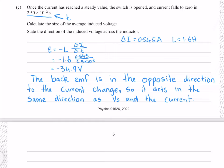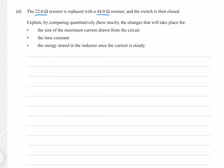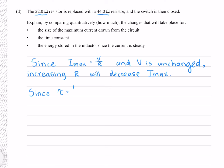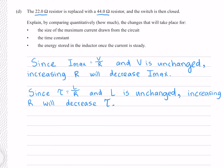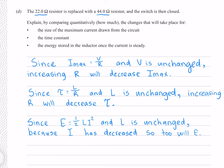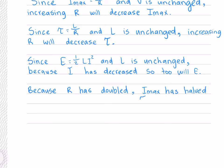The 22 ohm resistor is replaced with a 44 ohm resistor. Via Ohm's law, since maximum current is V over R and V is unchanged, doubling R halves I_max. Since the time constant is L over R and L is unchanged, doubling R halves the time constant. Since energy is half L I squared and L is unchanged, the halved current means energy quarters — because resistance has doubled, I_max has halved, the time constant has halved, and because current appears squared in the energy equation, the energy has quartered.